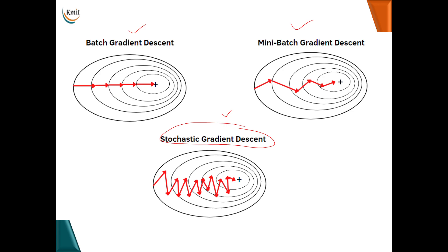This is the end of the discussion on different variations of gradient descent algorithms. In the next session we will cover the back propagation algorithm, which is the last topic of unit 1. Thank you all.